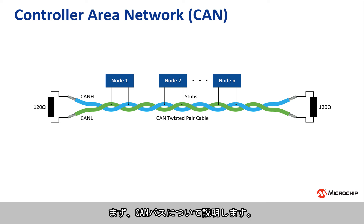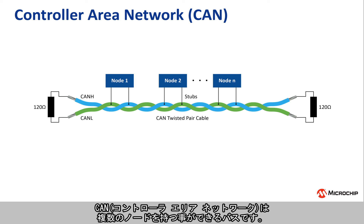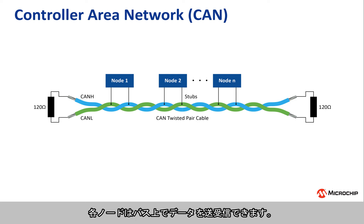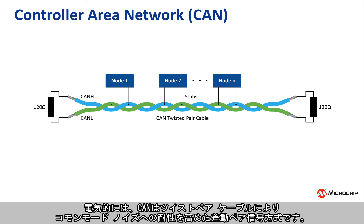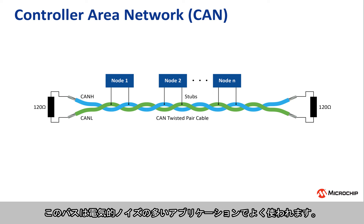First, a background on the CAN bus. CAN, or Controller Area Network, is a shared bus with multiple nodes. Each node can either transmit or receive on the bus. Electrically, CAN is differential pair signaling that utilizes a twisted pair of wires to improve immunity to common mode electrical noise in the environment. This bus is frequently used in applications with a lot of electrical noise.